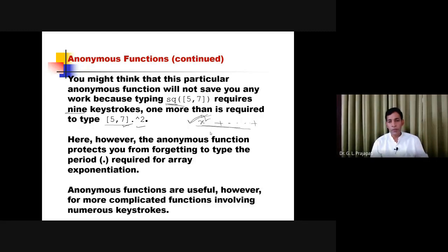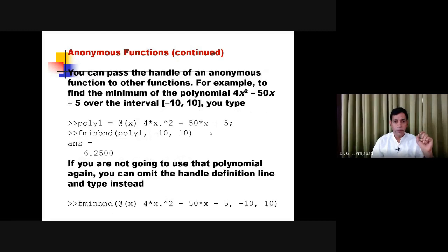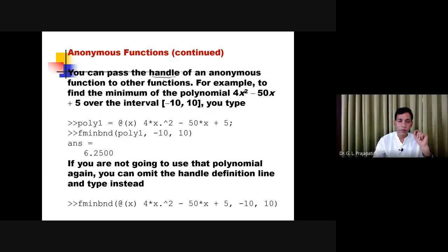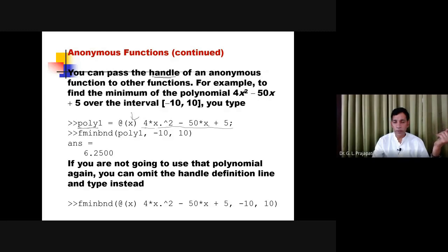Creating the anonymous function is always useful because you will not make mistakes when you need to reuse the same expression. Once you have defined the anonymous function, you can also pass the handle of an anonymous function to other functions. For example: poly1 = @(x) 4*x.^2 - 50*x + 5. The handle is 'poly1', with one argument x, and this is the polynomial expression.